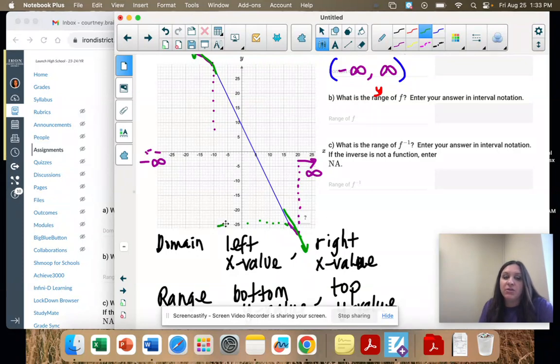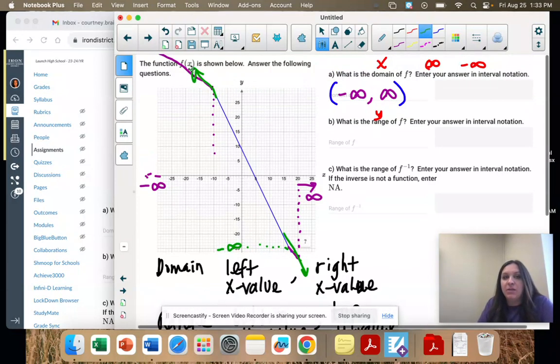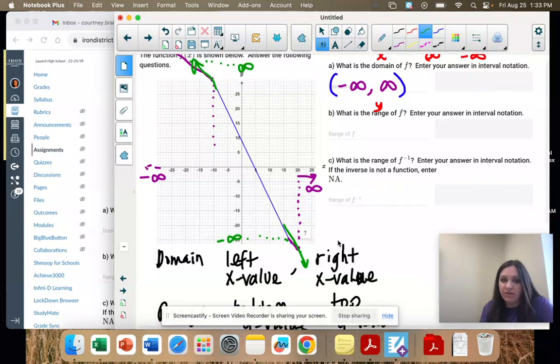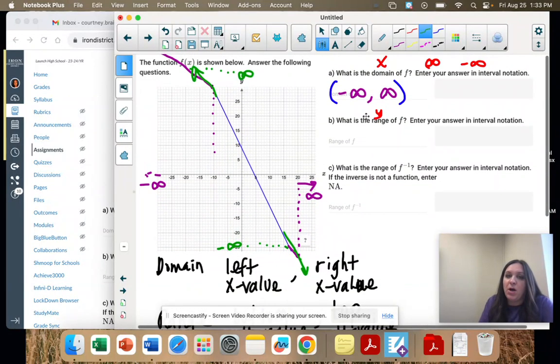So it actually goes to negative infinity. And same thing at the top, it's going to go up and up forever towards positive infinity. So our bottom value is negative infinity, our top is positive, and we use parentheses.